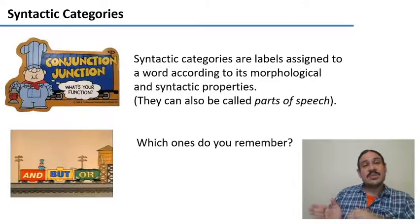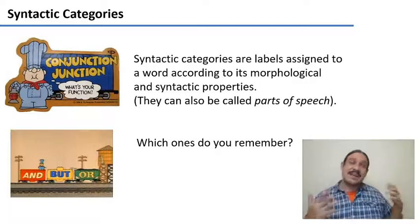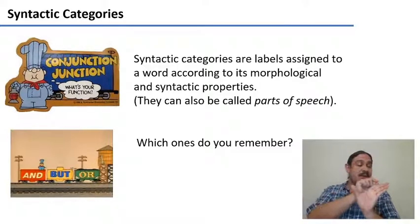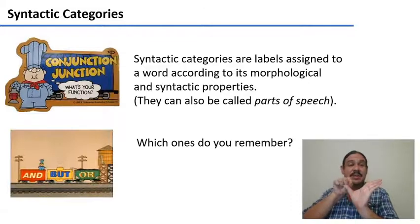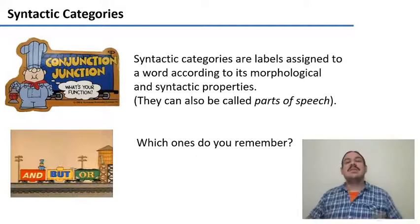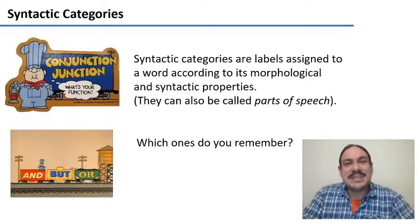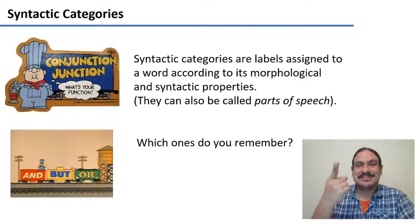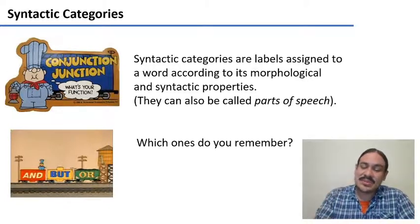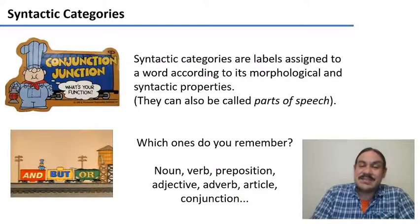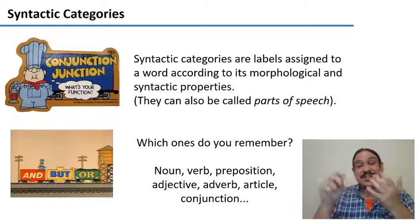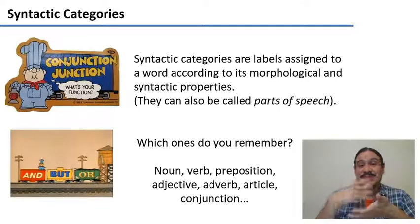Nouns and verbs are types of syntactic categories. A syntactic category is a label that you give to a word according to its morphological properties, but also to its syntactic properties — like what kind of function it is serving inside a sentence. So we have nouns and verbs. What other syntactic categories can you think of? You might have studied syntactic categories like nouns, verbs, but also prepositions, adjectives, adverbs, articles, and so forth.